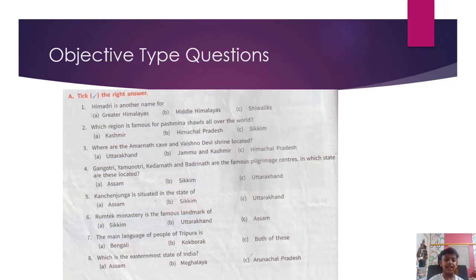A. Tick the right answer. Himadri is another name for the greater Himalayas. Which region is famous for Pashmina shawls all over the world? Kashmir. Where are the Amarnath cave and Vaishno Devi shrine located? Jammu and Kashmir.